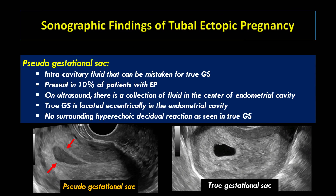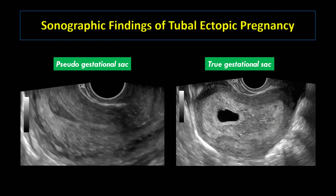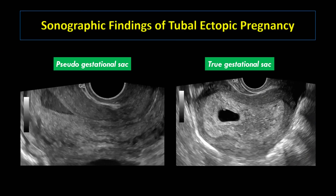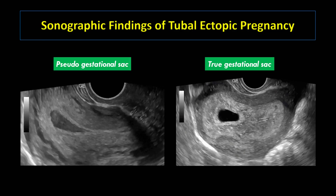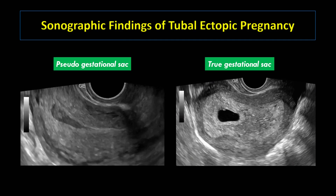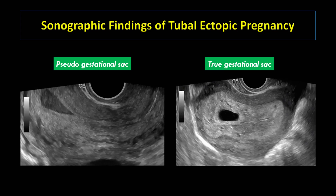Pseudo-gestational sac is an intracavitary fluid that can be mistaken for a true gestational sac. It is seen in 10% of patients with ectopic pregnancy. On ultrasound, there is a collection of fluid in the center of the endometrial cavity. However, the true gestational sac is located eccentrically in the endometrial cavity, as you can see in these two images. In pseudo-gestational sac, there is no surrounding hyperechoic decidual reaction as seen in the true gestational sac. These two ultrasound videos show the difference: the video on the right shows a pseudo-gestational sac — a central fluid collection with no decidual reaction — while the one on the left is a true sac embedded eccentrically in the endometrium with surrounding thick echogenic decidual reaction.